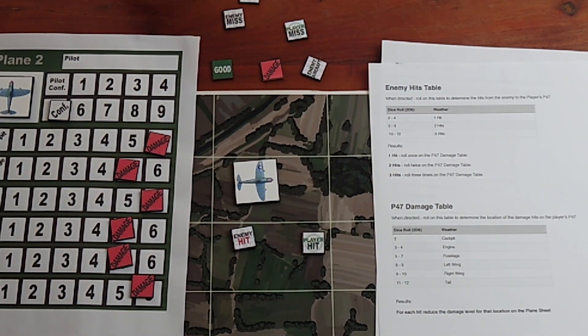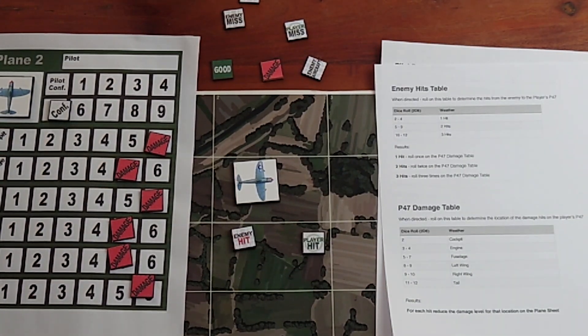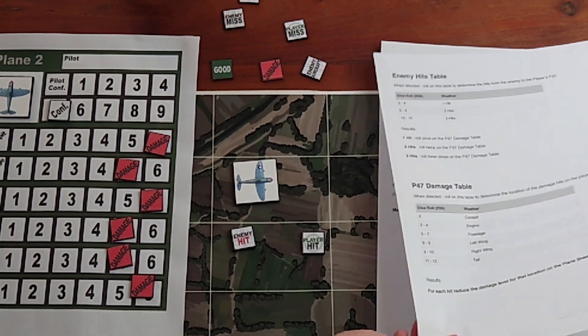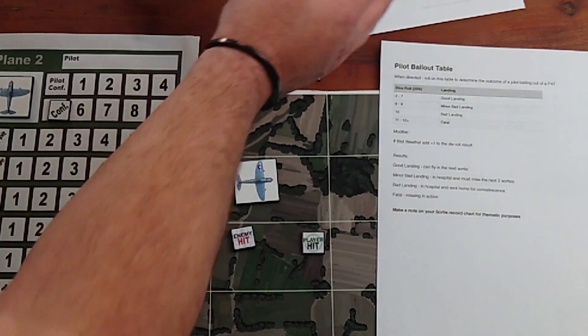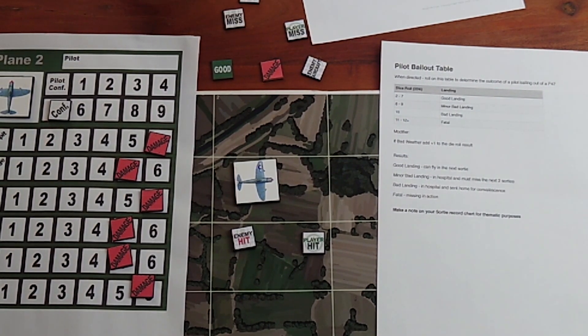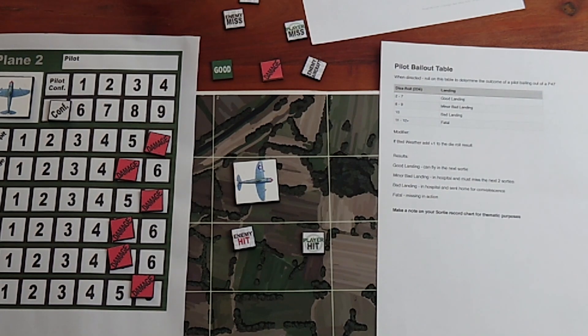There's no difference in terms of the enemy aircraft and the enemy ground forces. It all works exactly the same way. Now if you do lose a P-47, for thematic purposes there is a pilot bailout table to see when being shot down what happens to the pilot.